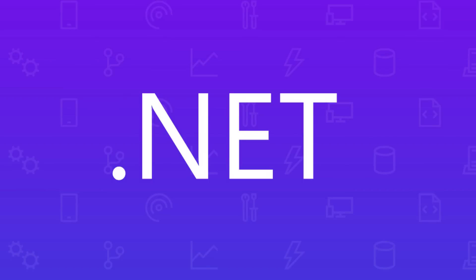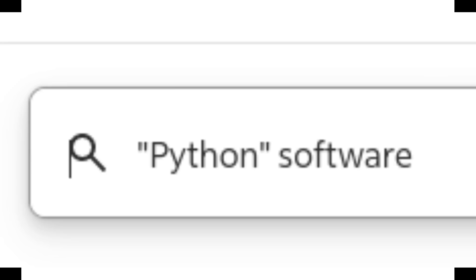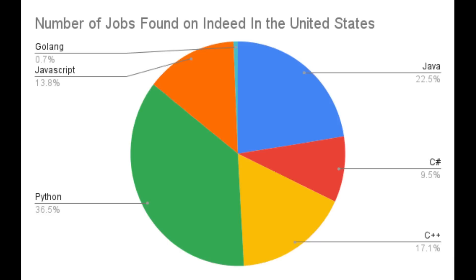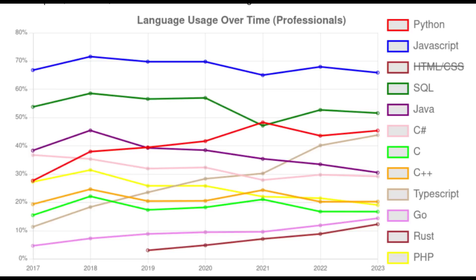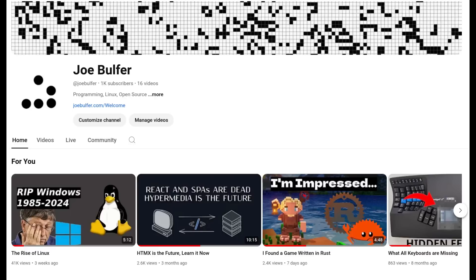Before finishing off the video, I'd like to go over employment and usage statistics. After searching for a particular language wrapped in quotes with the word 'software' on Indeed, here are the results. You can see Java and Python having the largest number of jobs, and Go with the lowest — although it may not be accurate because of the difficulty of searching a general word like Go, giving false positives. This is a result of searching for 'Golang', but many jobs likely just refer to it as Go. Moving on to usage statistics, I've gathered data from the yearly Stack Overflow survey, where professional developers report which languages they have worked with extensively in the past year. You can find the website in the description. That sums up the video — thanks for watching. Like, comment, and subscribe to support more content like this.